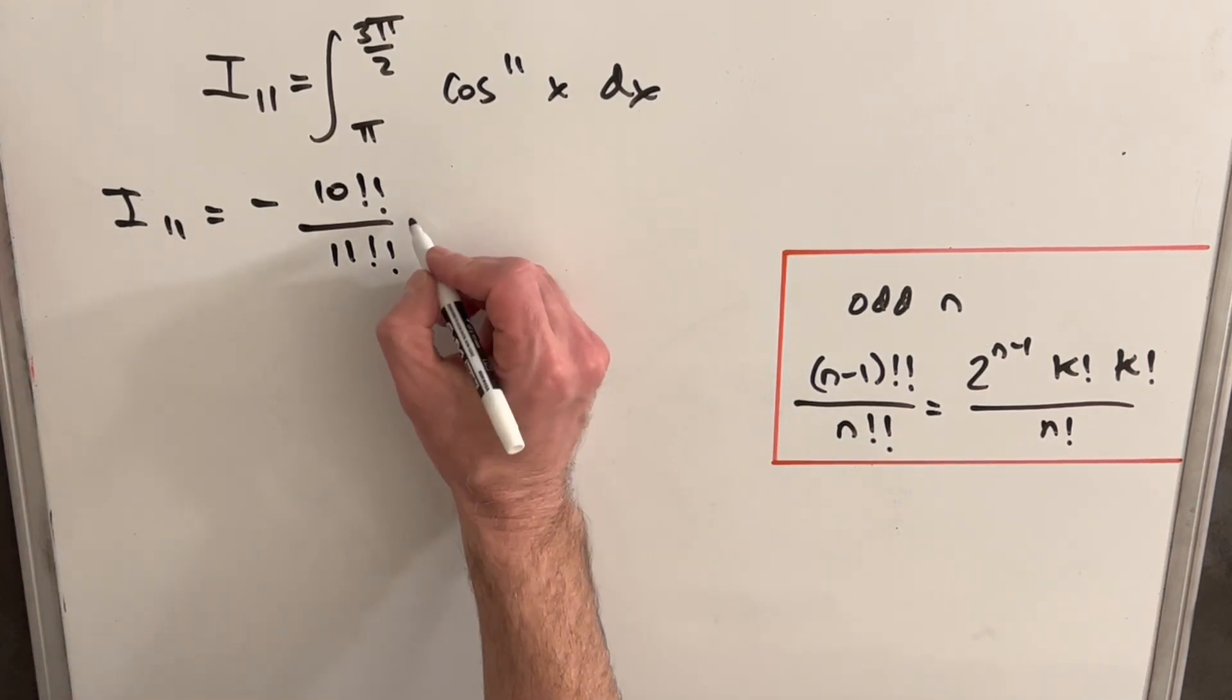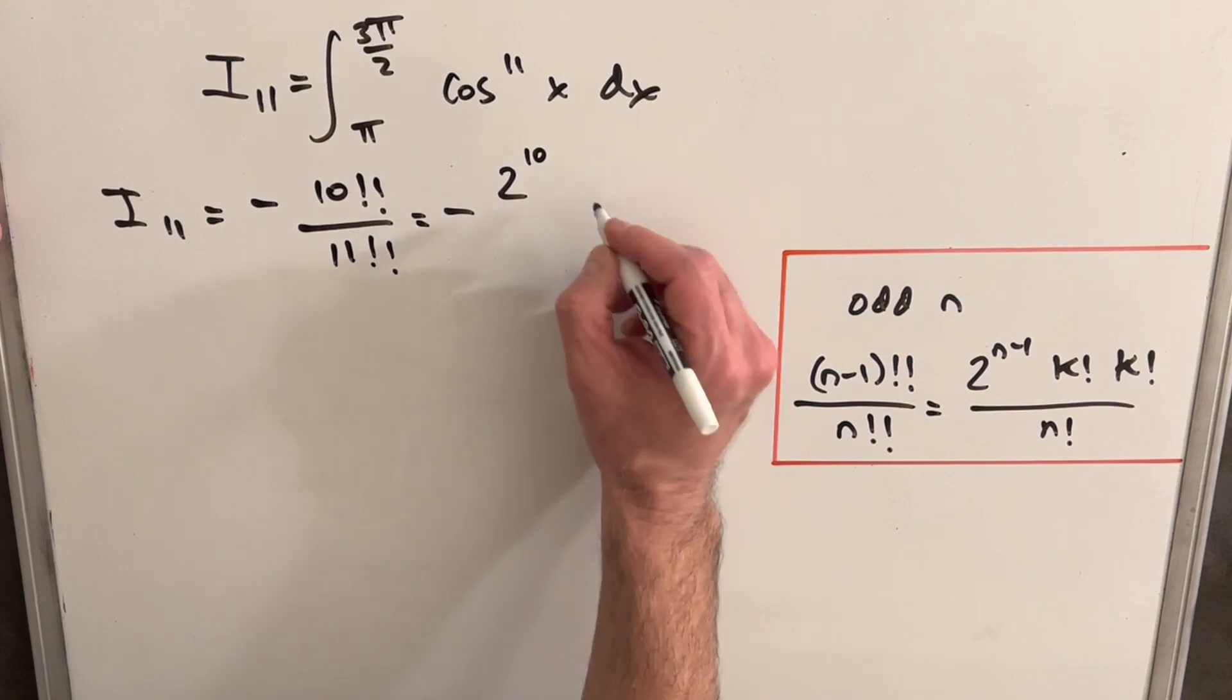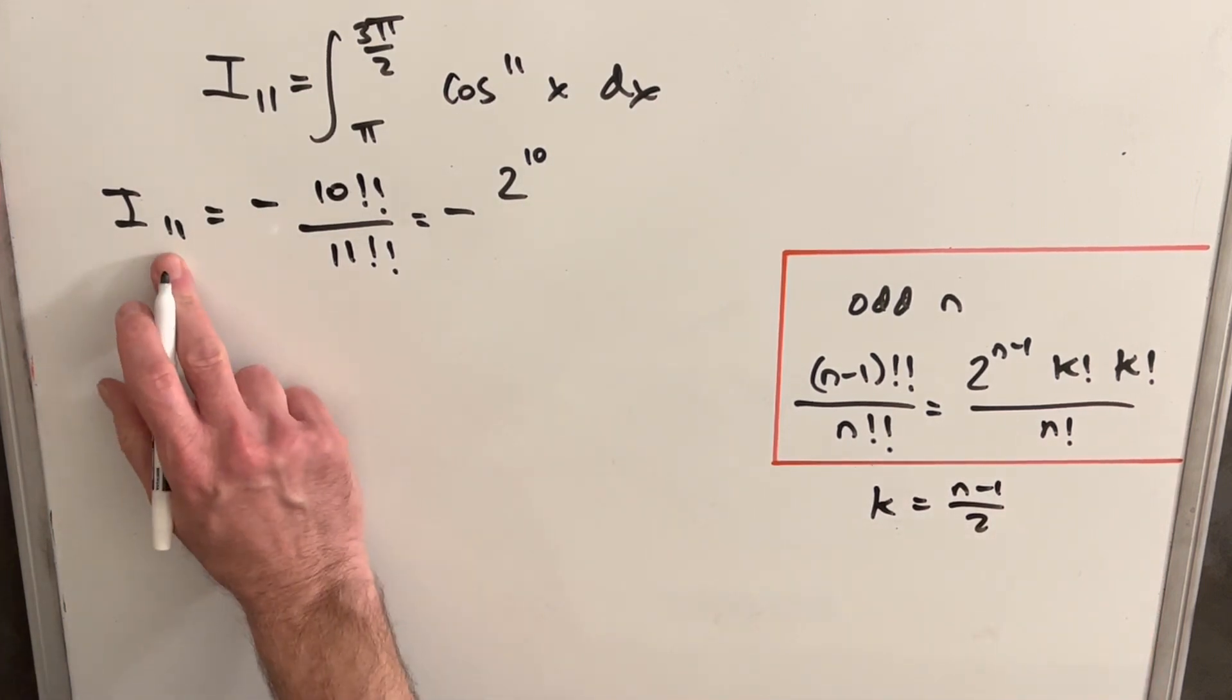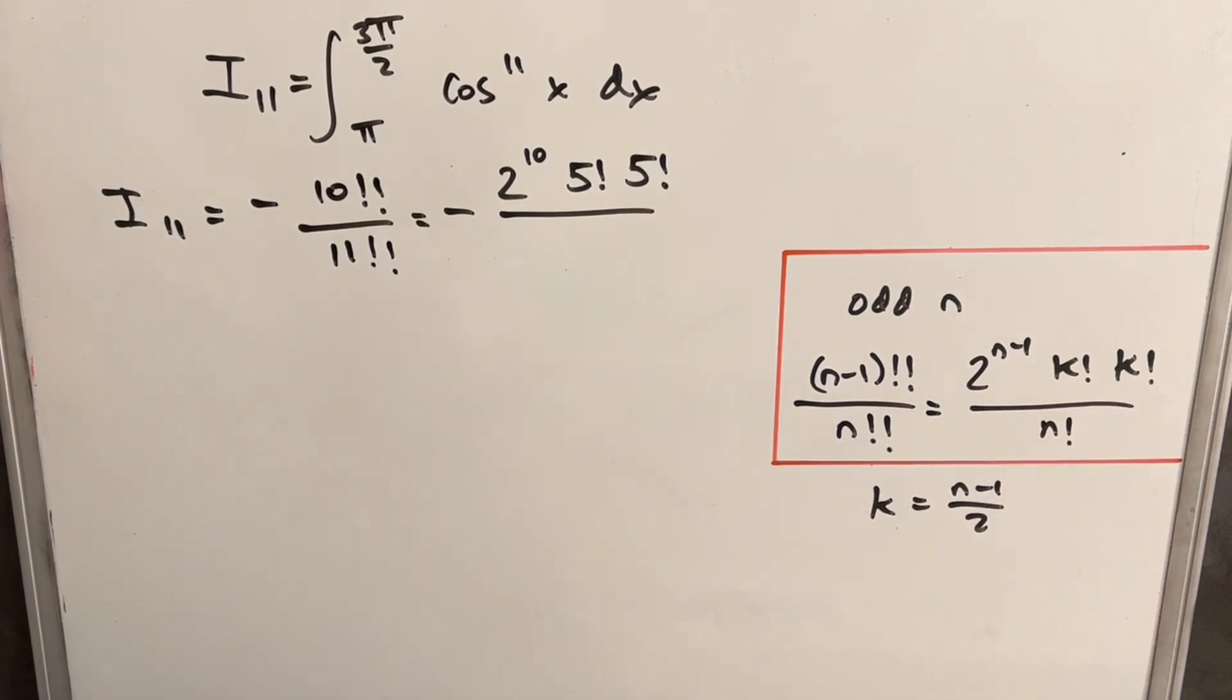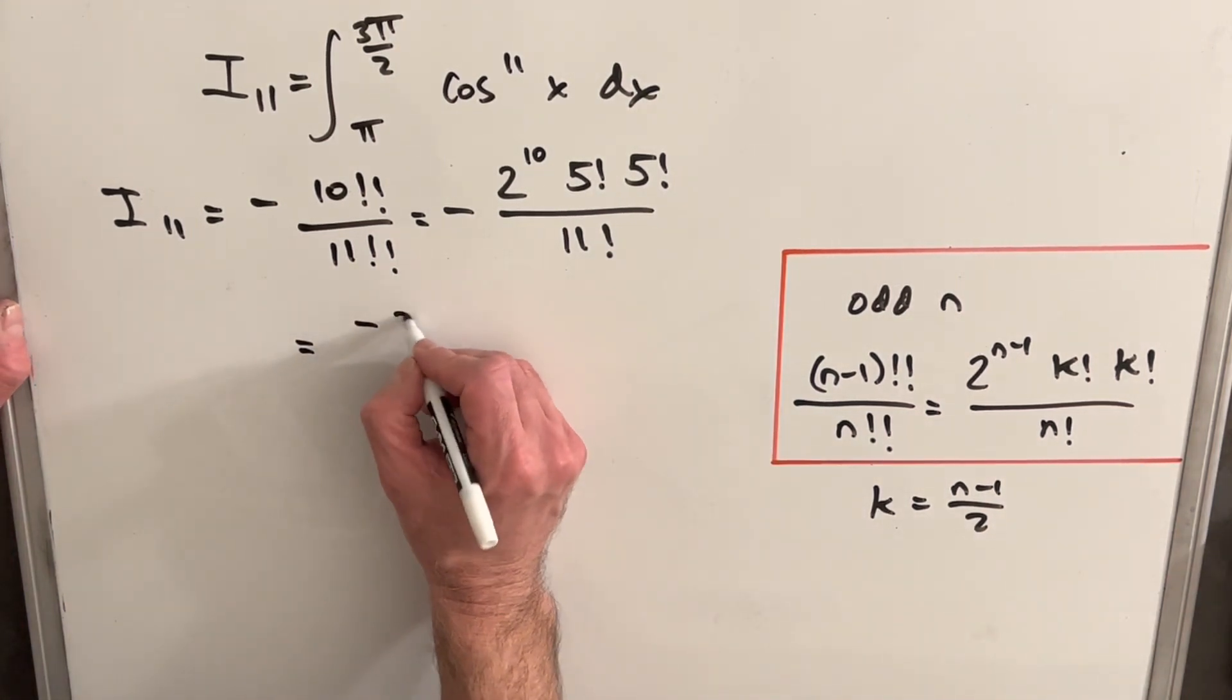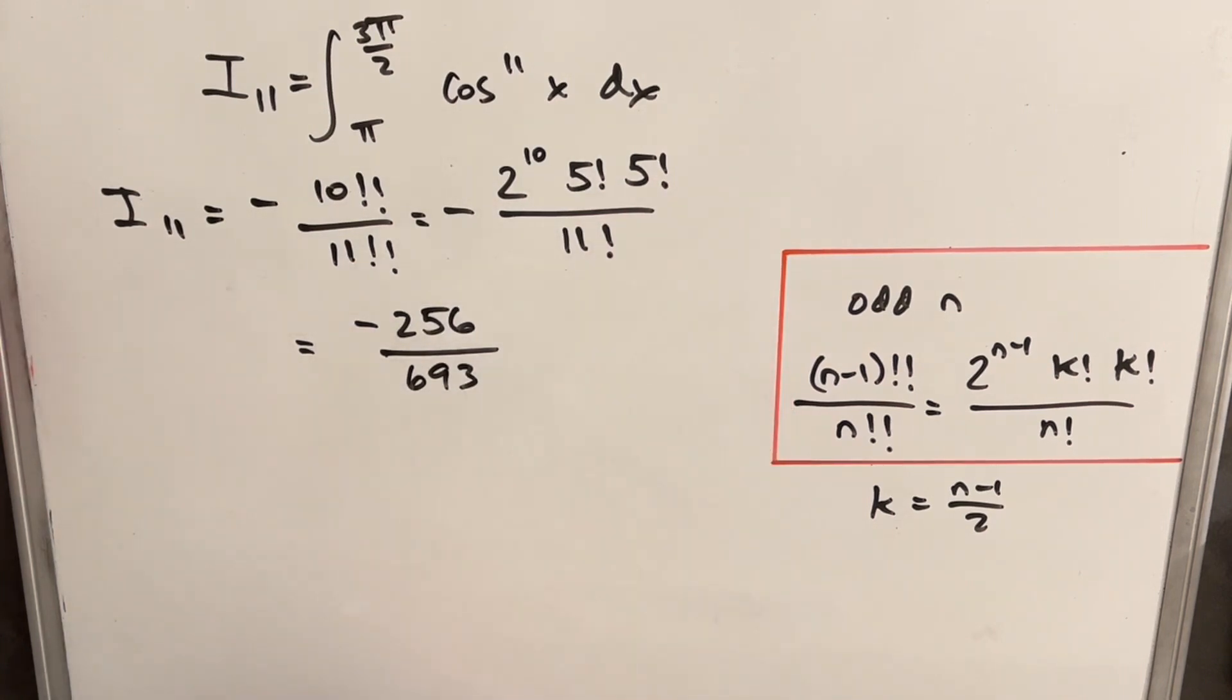Let's just use this to rewrite the whole thing. So our n minus 1 is going to be 10, so we're going to have 2 to the 10. And then k, k is going to be (n minus 1) over 2. So in this case, that's going to be 5. So we're going to have, so 11 minus 1 is 10, divided by 2 is 5. So we're going to have 5 factorial, 5 factorial over n, which is 11 factorial. And so this would be another way to express that answer. And finally, if you wanted, you could do all the cancellation with these factorials and reduce this further. I did that, and what I got was minus 256, which is 2 to the 8th over 693, is what happens when you cancel out all the 5s. And so really our fraction answer would be minus 256 over 693.